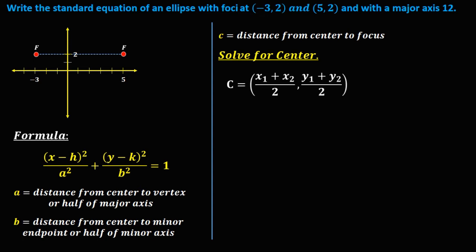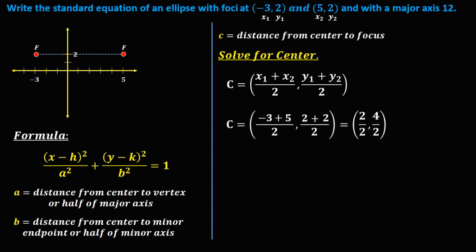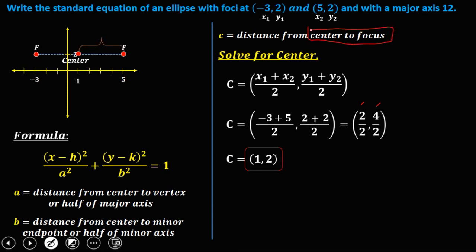To find the center, use the midpoint formula: ((x₁ + x₂)/2, (y₁ + y₂)/2). Substituting the foci coordinates: ((-3 + 5)/2, (2 + 2)/2) = (2/2, 4/2) = (1, 2). So the center is (1, 2). For c, count from the center to a focus on the graph: 1, 2, 3, 4 — so c = 4.